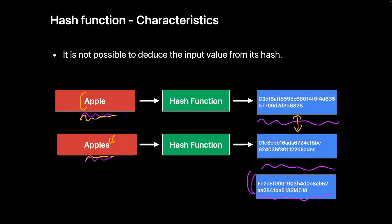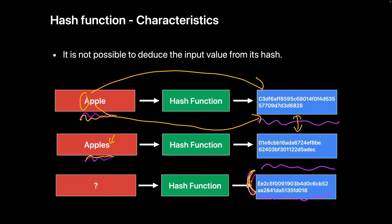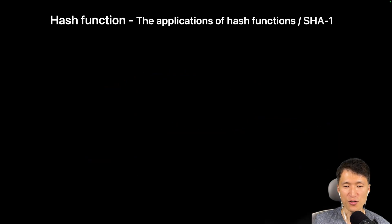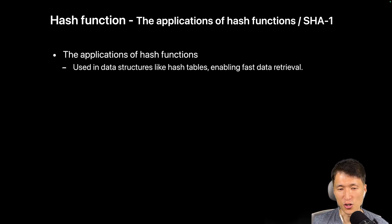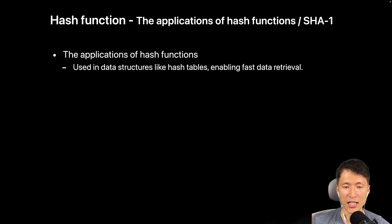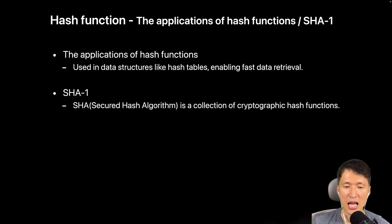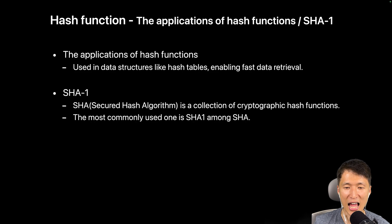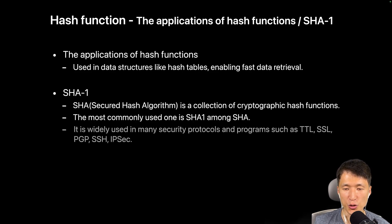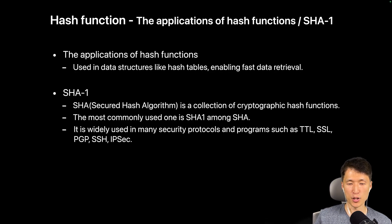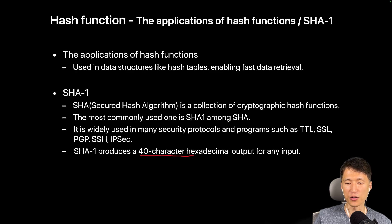The third characteristic of hash functions is that you cannot infer the input value from the hash. Even if you obtain a hash from 'apple' and a different hash from 'apples', it is absolutely impossible to guess the input that produced a given hash. Every single character difference results in a completely different hash, and you cannot determine the input used to obtain a specific hash. Hash functions are used in data structures like hash tables, cryptography, and to verify data integrity. Among hash functions, SHA — Secure Hash Algorithm — is a collection of cryptographic hash functions, and the most commonly used is SHA-1, which produces a 40-character hexadecimal output and is used in security protocols such as SSL and PGP.